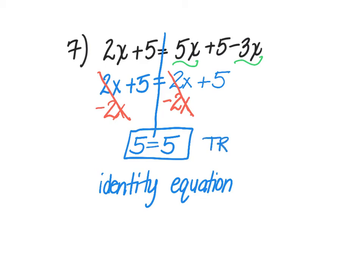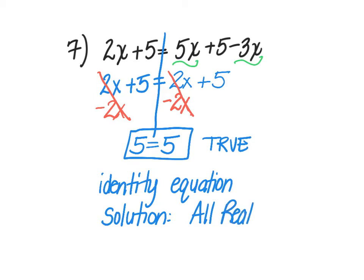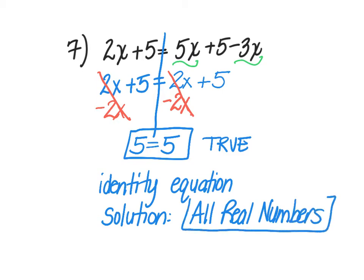5 is equal to 5 — that is true. Anytime you have an identity equation, when your variables disappear and you have a true statement, the solution is all real numbers. That means any number I plug into my equation is going to work. I could plug in 3, negative 2, or one half — no matter what number I plug in, it's going to work.